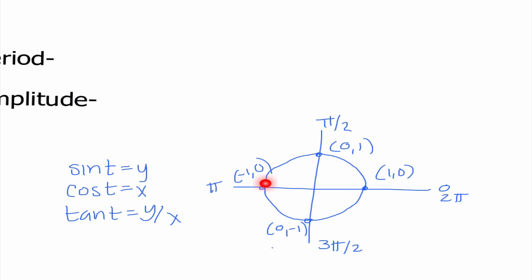So if we look at all of the quadrantal values, this is where I use these ordered pairs. Our radius of our unit circle is 1. That's why this ordered pair is (1, 0) — we're going to the right one and not moving up or down at all. At pi over 2, it's (0, 1). At pi, it's (-1, 0). And at 3 pi over 2, it's (0, -1). We also need to remember sine is y, cosine is x, and tangent is y over x.